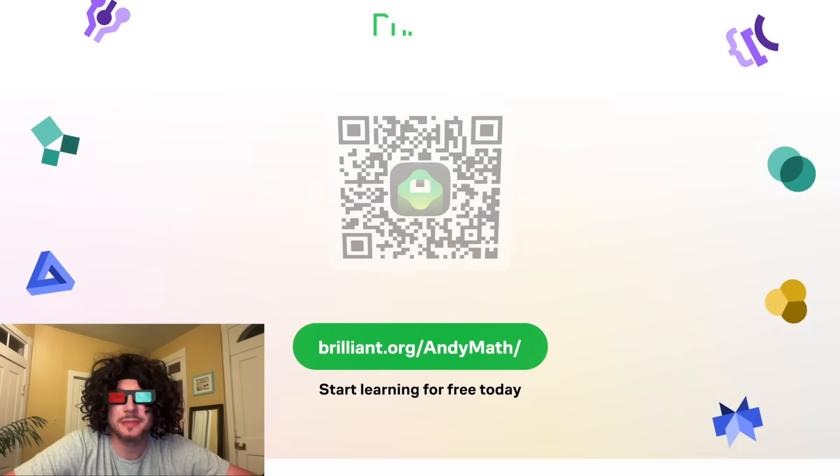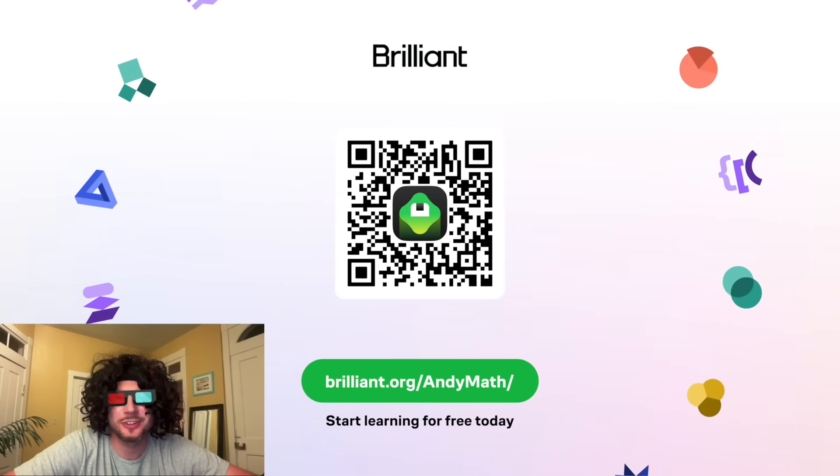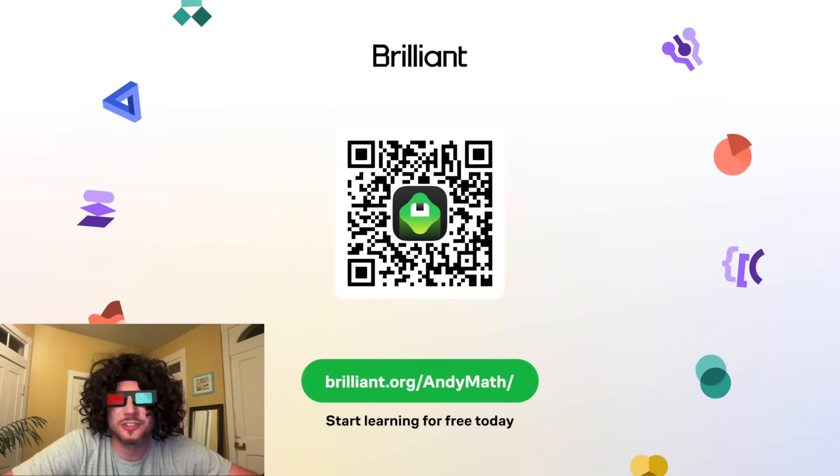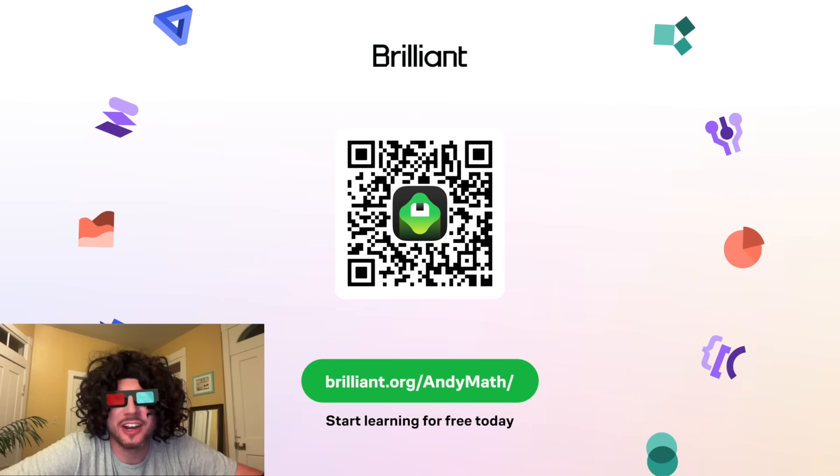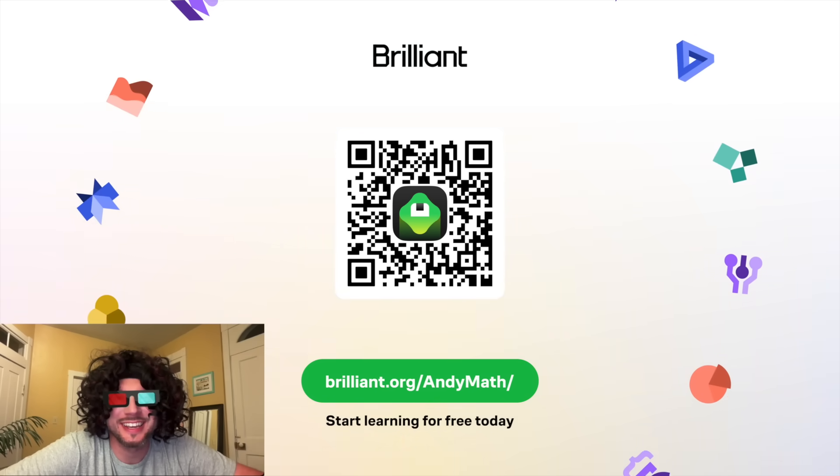To try Brilliant for free, visit brilliant.org slash andymath or scan the QR code on screen. Or you can click on the link in the description. You can also get 20% off an annual premium subscription. How exciting.